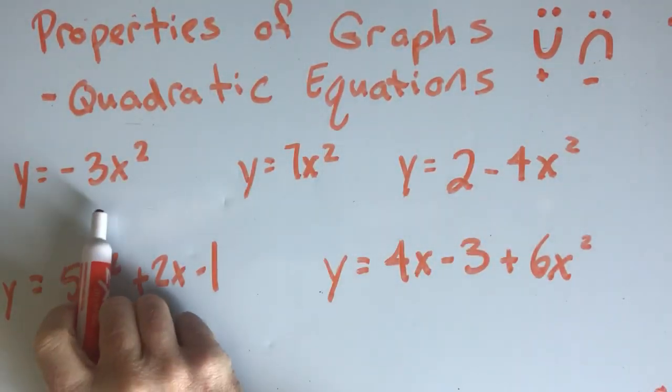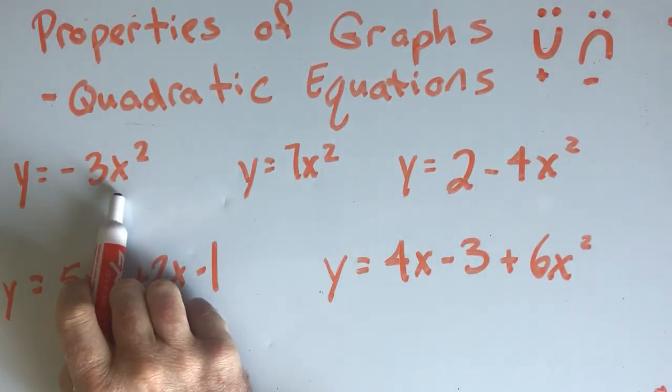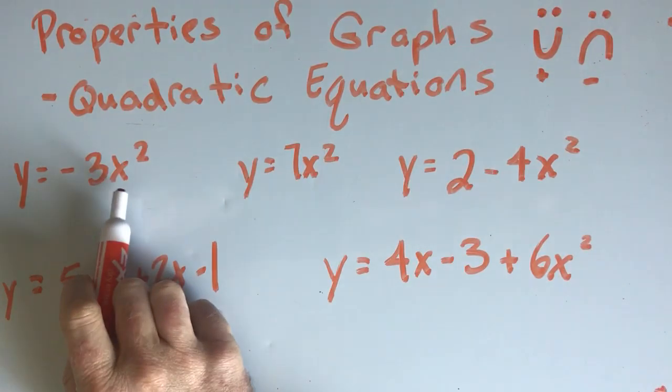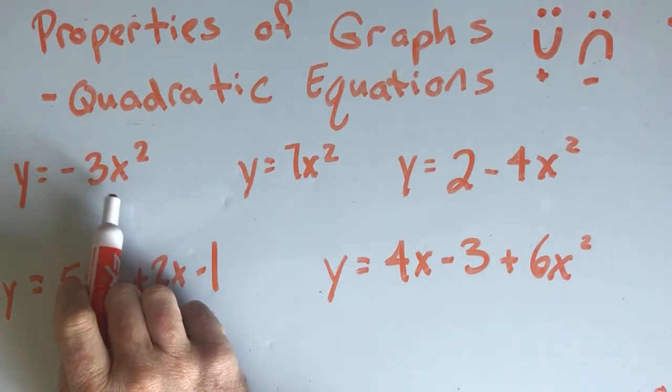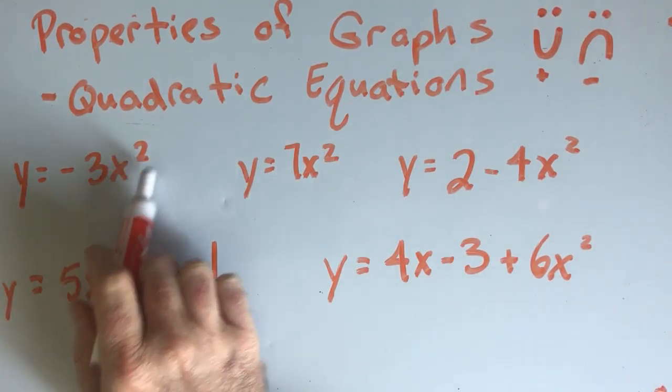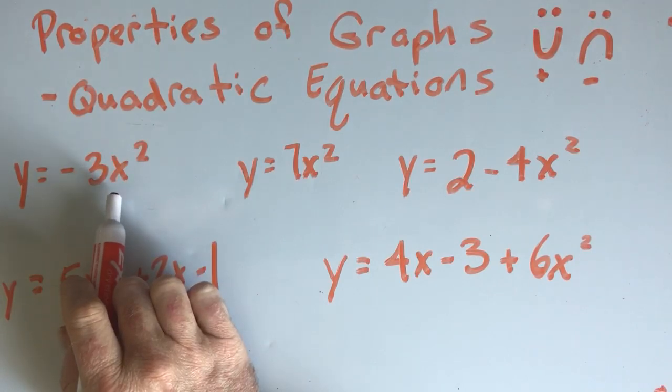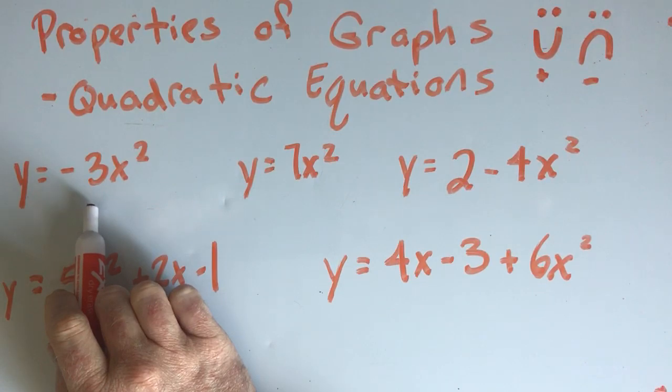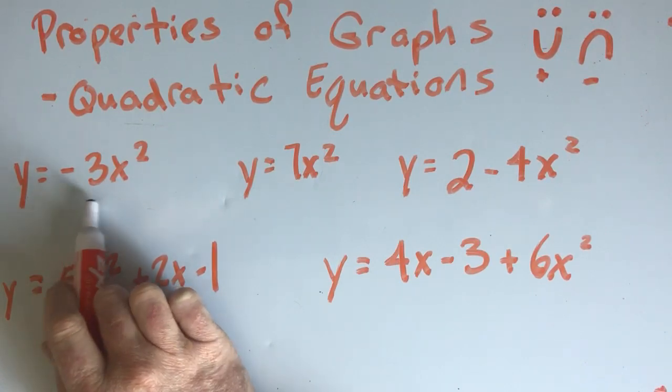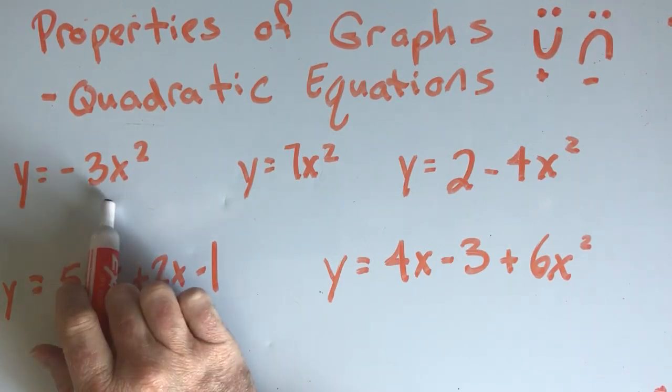So for instance, we will start here. The number that is in front of the x squared. The highest power is the x squared in a quadratic formula. And then what we want to do is find the number that is multiplied by the x squared. So right here I have a negative three that is multiplied by the x squared.